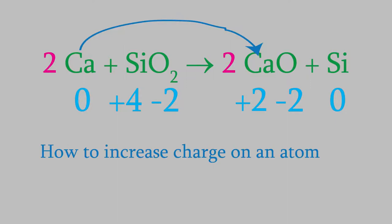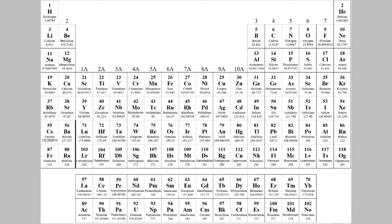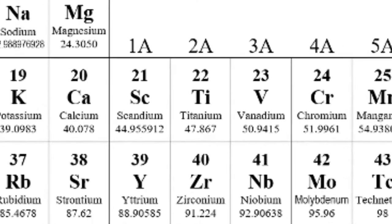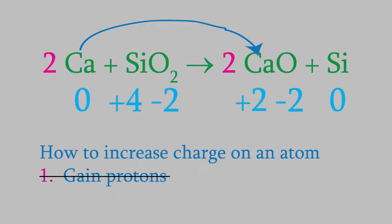First, we could have gained two protons. But we know that can't be what happened, because if an atom gains protons, it changes what the element actually is. If the calcium had gained two protons, that would have turned it into a titanium atom. That can't be right. The other possibility is that the calcium could have lost two electrons. Since the electrons have a negative charge, losing two of them would cause the charge on the calcium to go up. And that's what happened here.